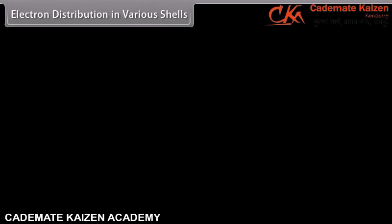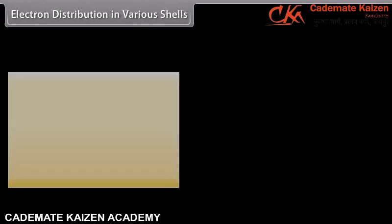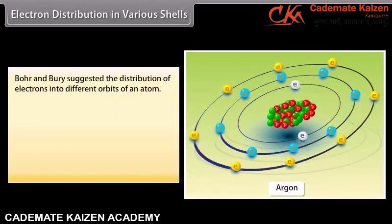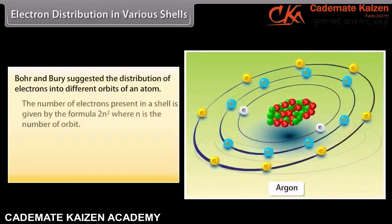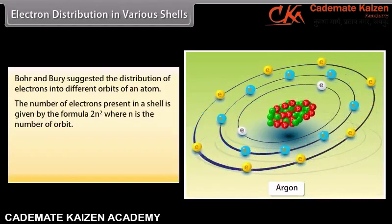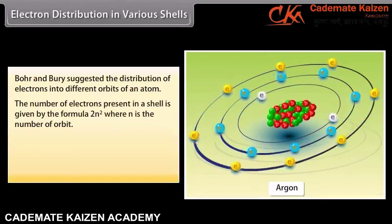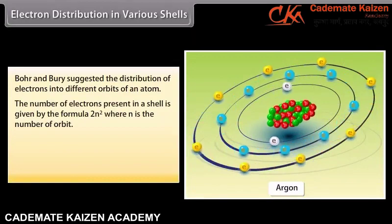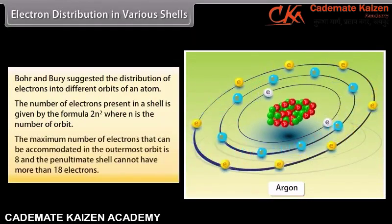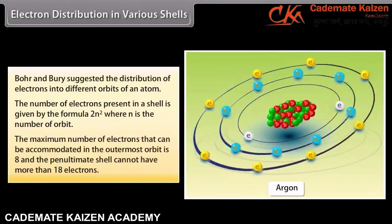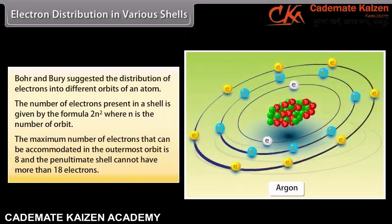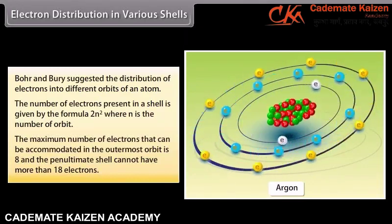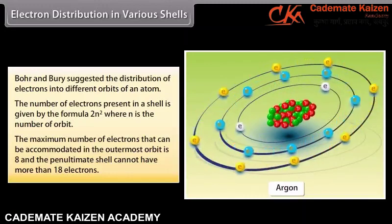Electron distribution in various shells. Bohr and Burry suggested the distribution of electrons into different orbits of an atom. The number of electrons present in a shell is given by the formula 2N², where N is the number of the orbit. The maximum number of electrons that can be accommodated in the outermost orbit is 8, and the penultimate shell cannot have more than 18 electrons.